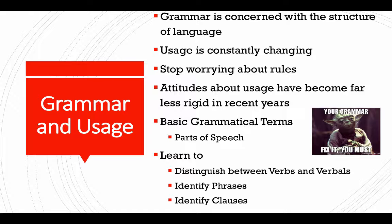A noun is the name of a person, place, or thing. A pronoun is a substitute for a noun — instead of saying someone's name, you'd say 'she.' A verb expresses action, a condition, or a state of being. An adjective modifies a noun or pronoun. An adverb modifies a verb, adjective, or another adverb. A conjunction links words or groups of words together. A preposition shows a relationship between nouns and pronouns. An interjection is an independently expressed feeling.